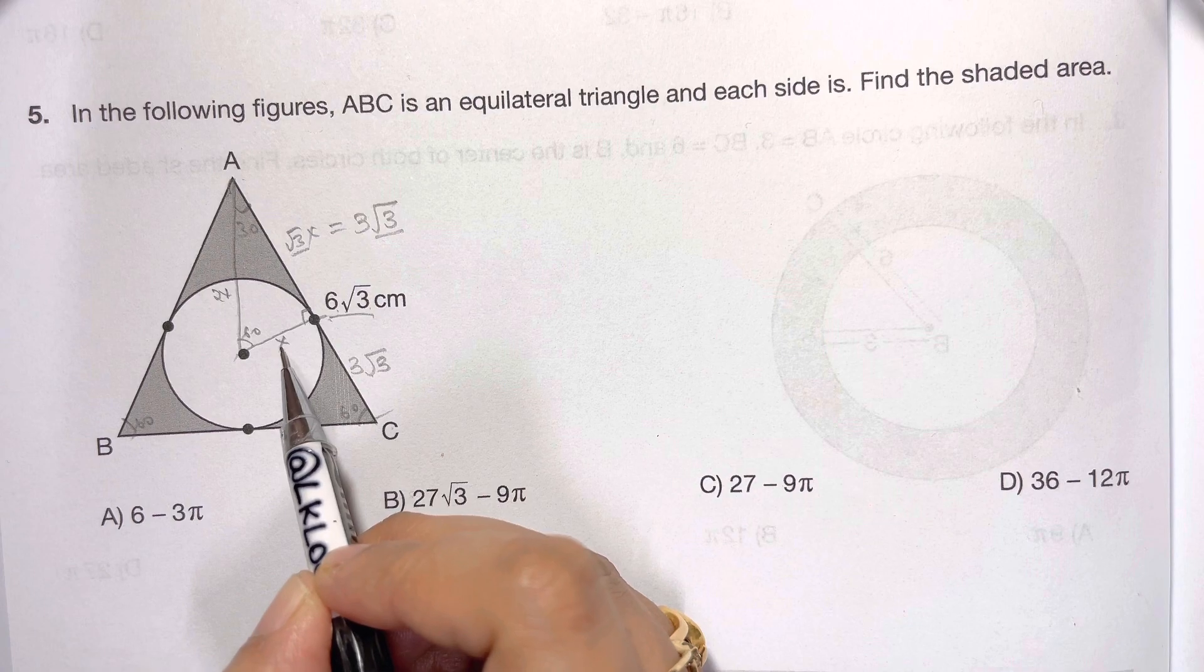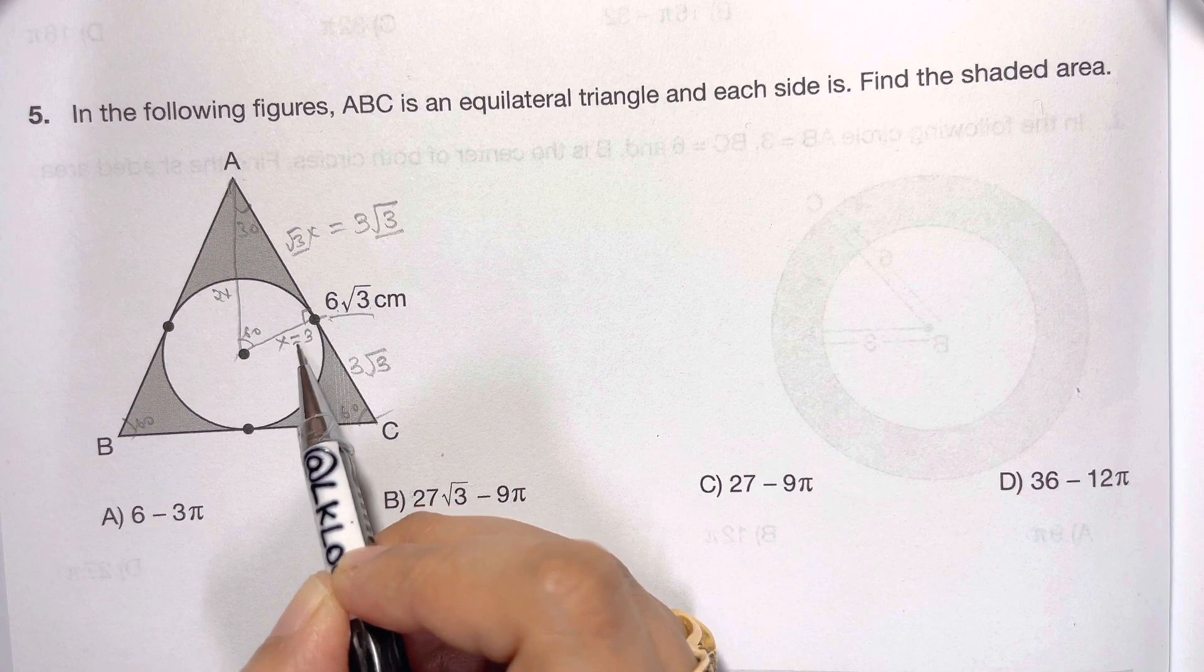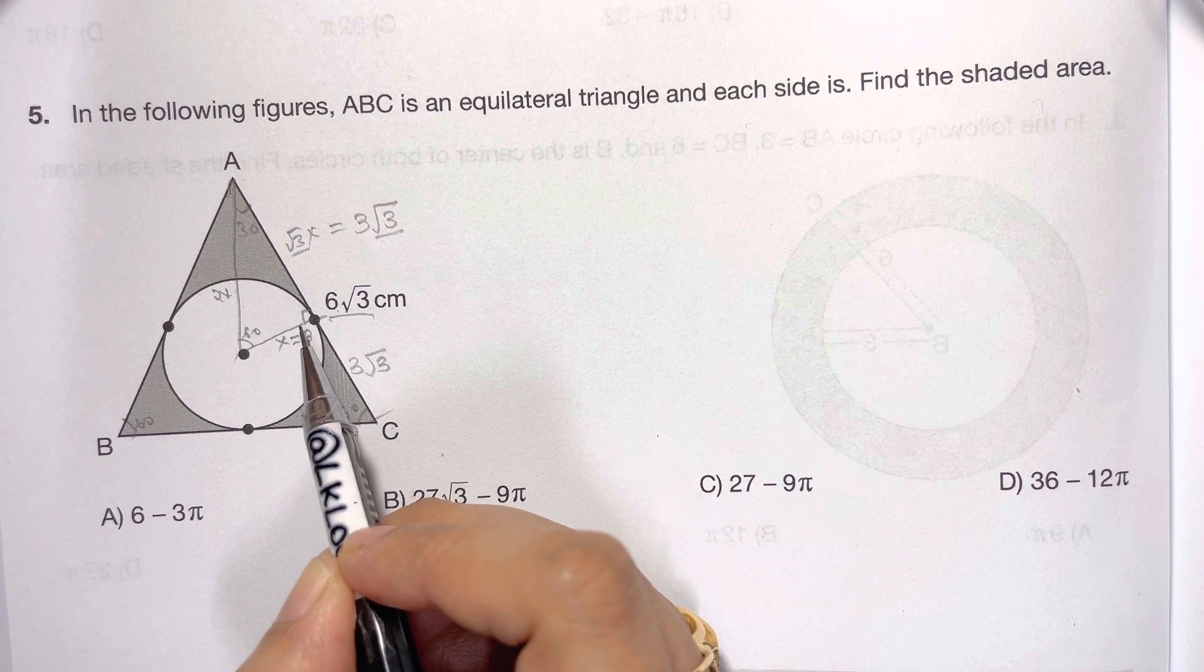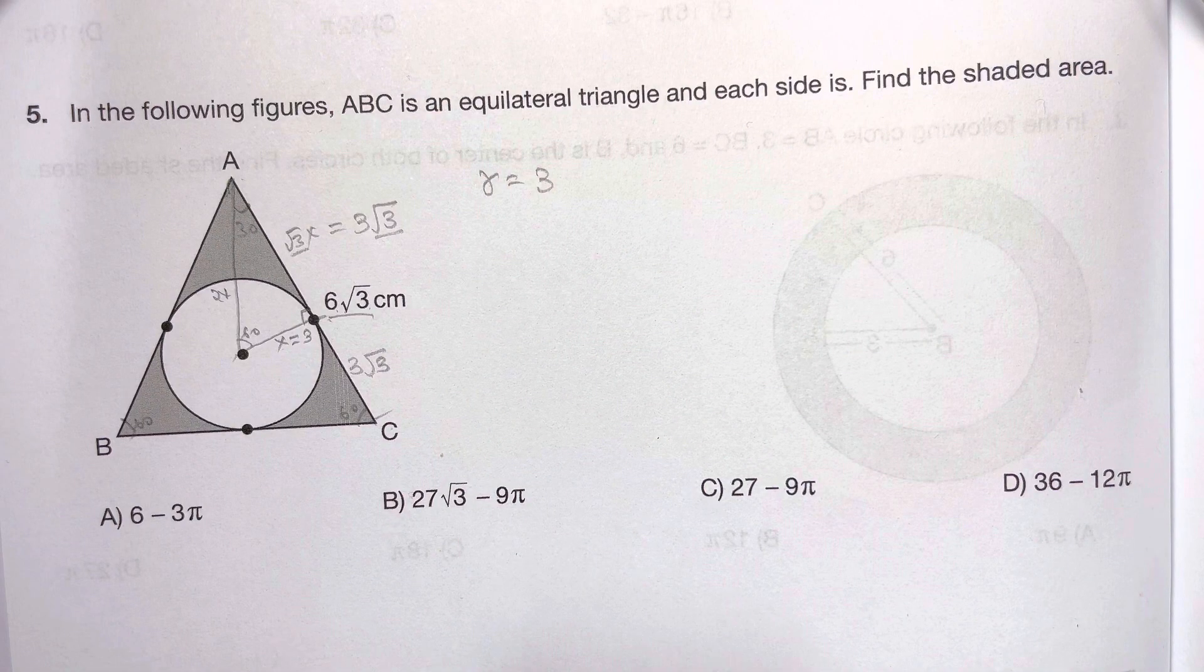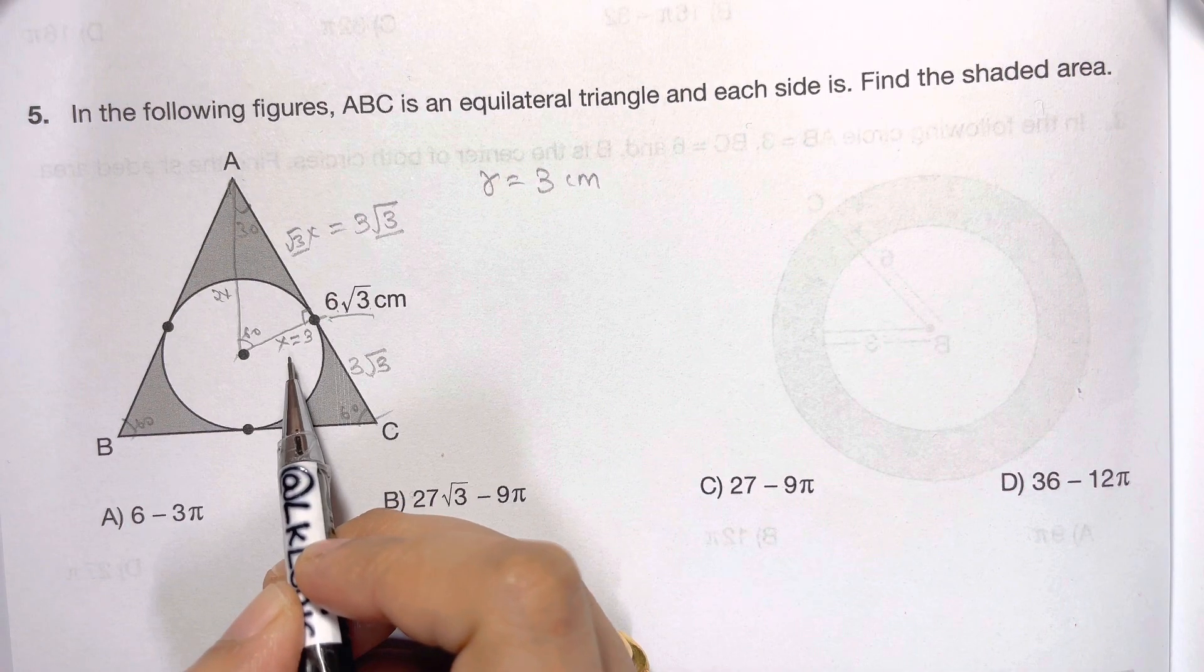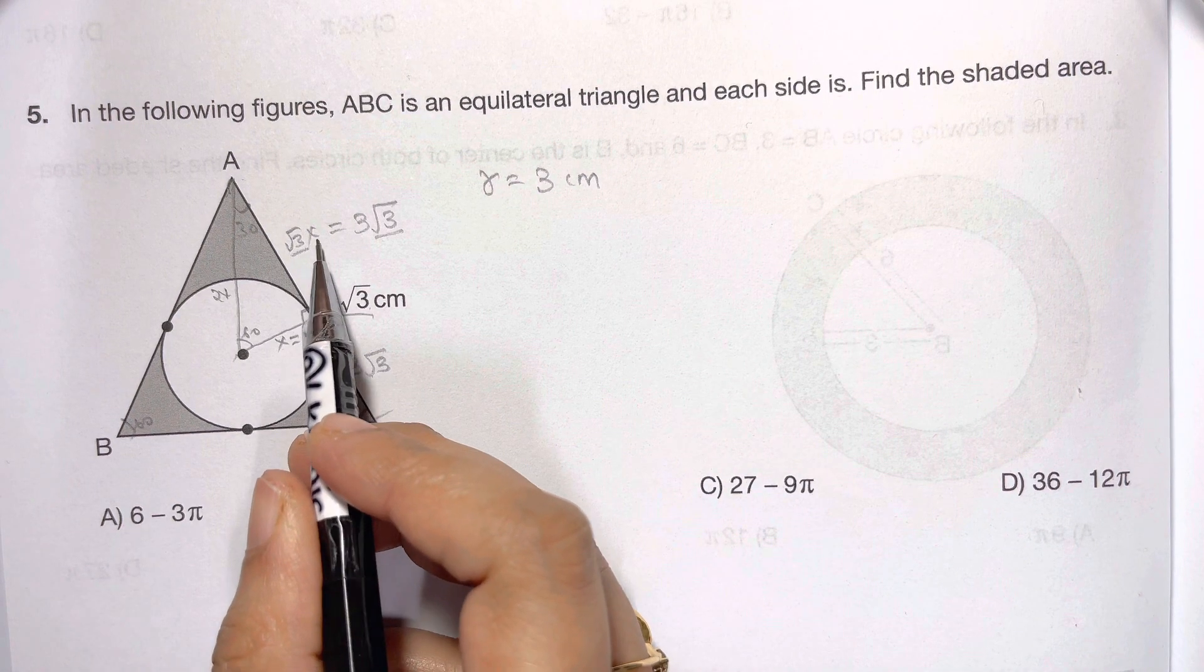From here you have √3, √3 cancels, x is equal to 3. So we have got the value of x. What is x? x is equal to 3, so that's your radius. Radius is equal to 3.